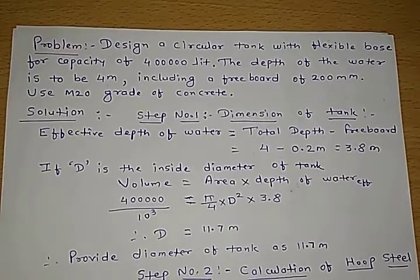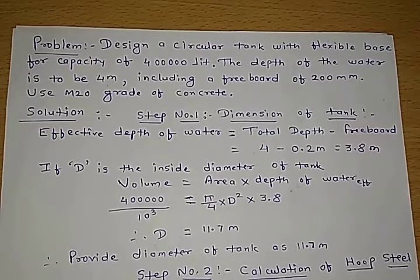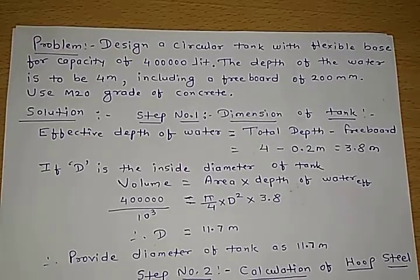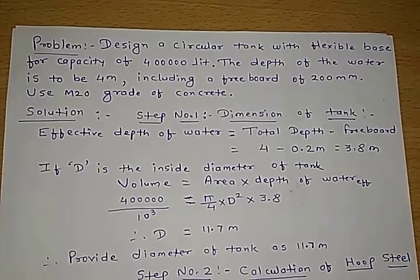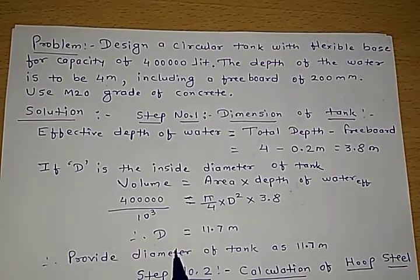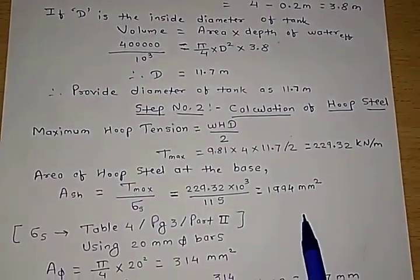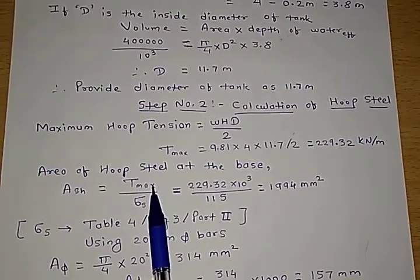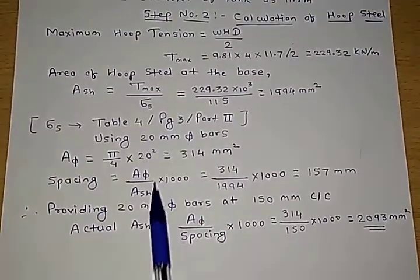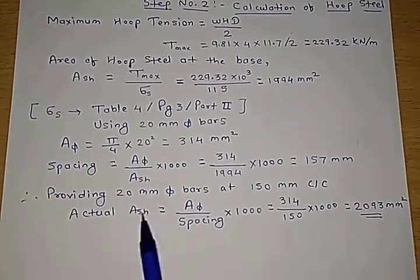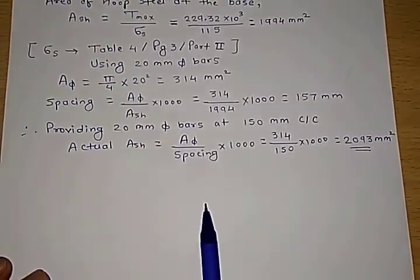I will be recapping the earlier step of the problem we are solving: a circular water tank with flexible base. The capacity, depth of water, and freeboard are given, and the concrete is M20. In the last video we went through calculation of diameter, hoop steel, area of hoop steel, spacing, and actual area of hoop steel.